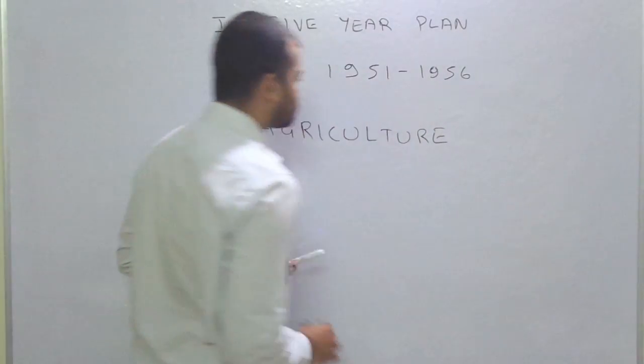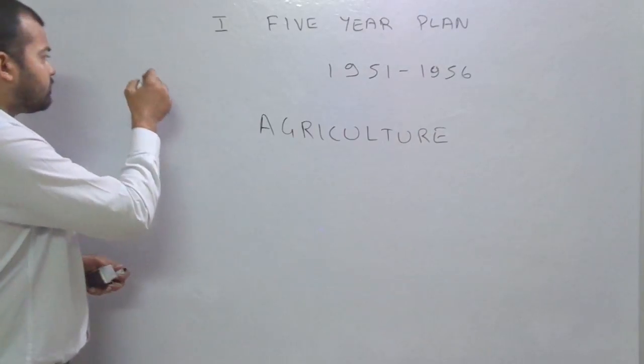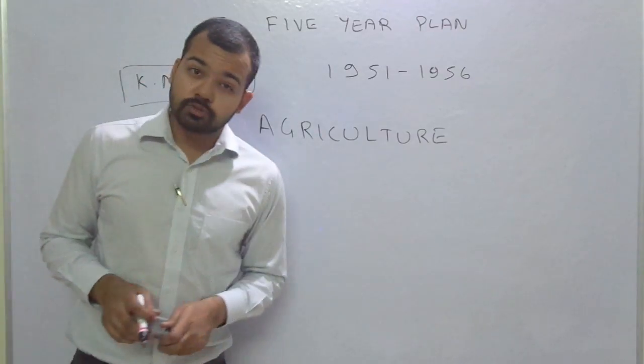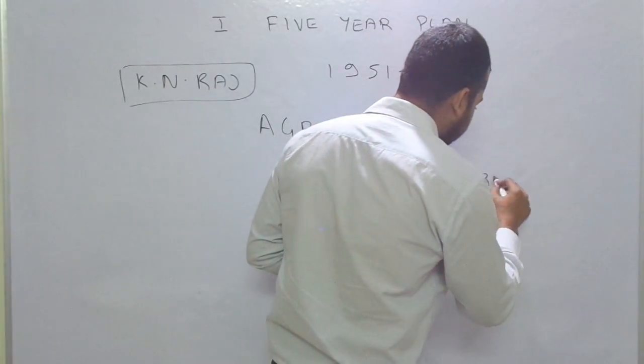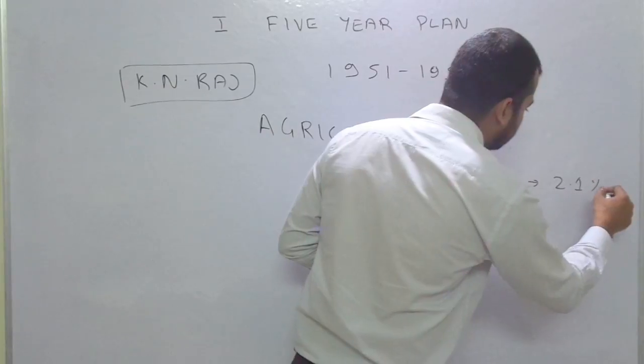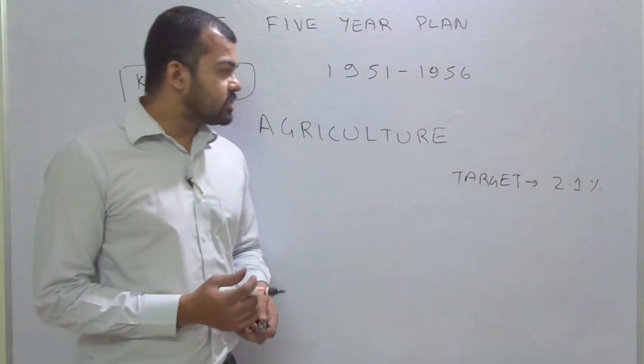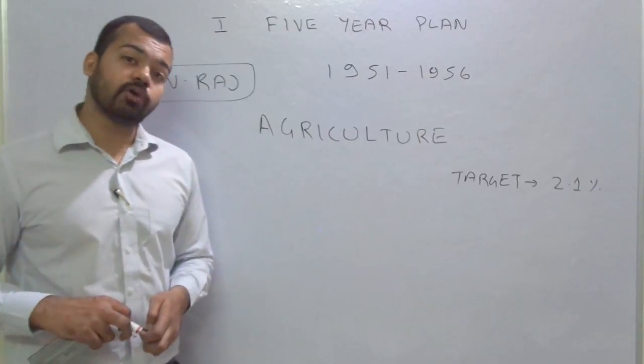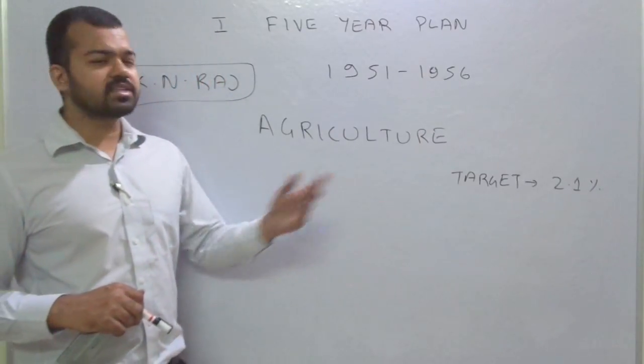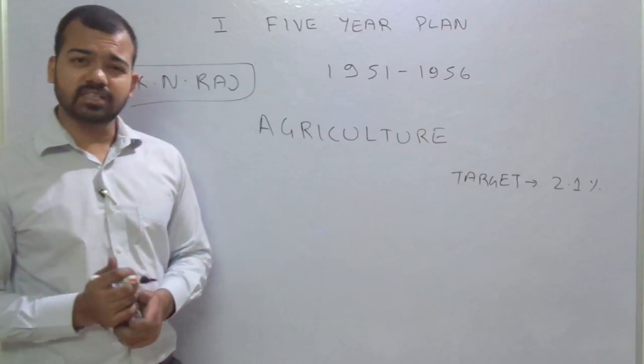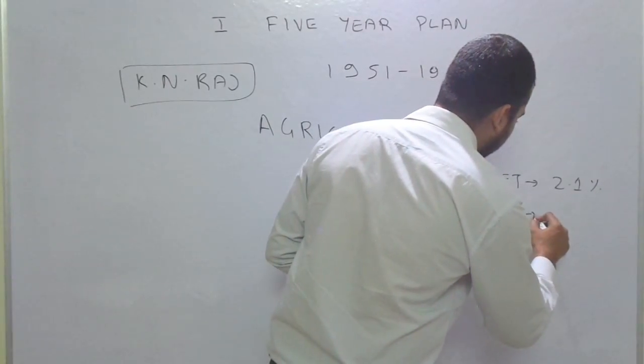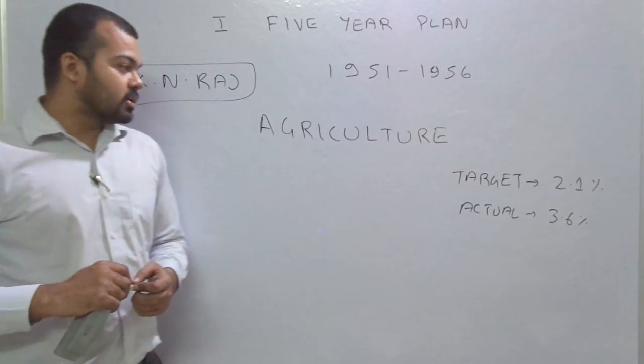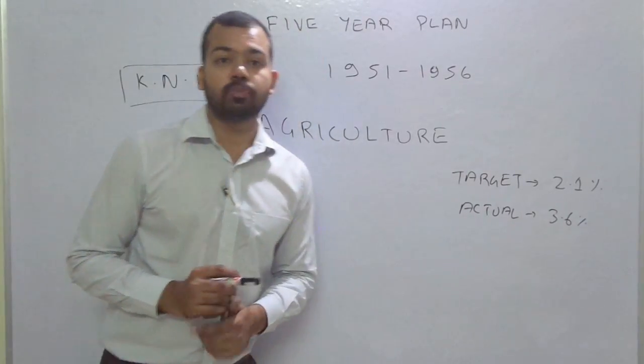Another major factor about this 5-year plan is the architect. Economist K.N. Raj was the architect of this first 5-year plan. The target growth rate was 2.1%. This is very low, but due to geopolitical situations like second world war and partition in 1947, government expected that India should grow at 2.1% at the initial phase. But actually the actual growth rate was 3.6%. The plan was later declared successful because we achieved more than 2.1%.